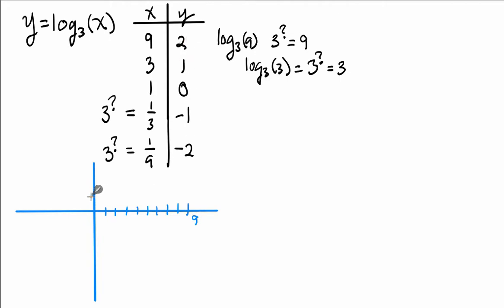The Y values reach as high as 2 for this chart and go as low as negative 2. Let's just put these points in: X = 9, Y = 2; X = 3, Y = 1; X = 1, Y = 0.